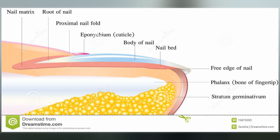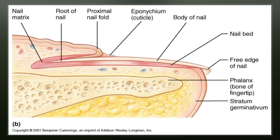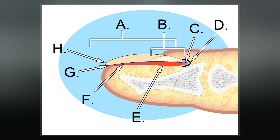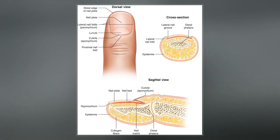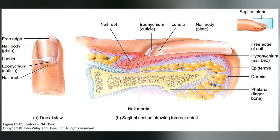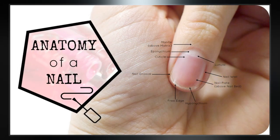The matrix produces cells that become the nail plate. The width and thickness of the nail plate is determined by the size, length, and thickness of the matrix, while the shape of the fingertip itself shows if the nail plate is flat, arched, or hooked. The matrix will continue to produce cells as long as it receives nutrition and remains in a healthy condition. As new nail plate cells are made, they push older nail plate cells forward, and in this way older cells become compressed, flat, and translucent.